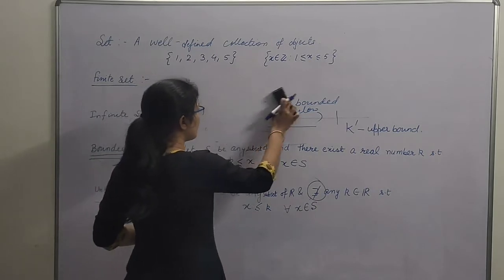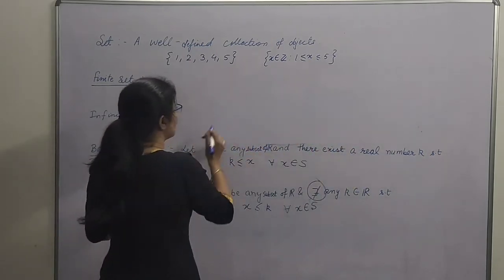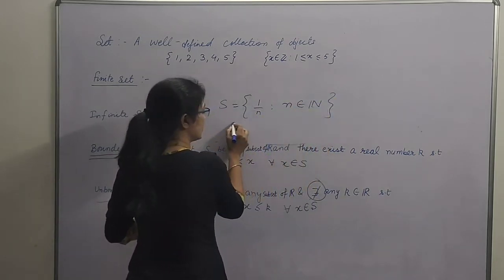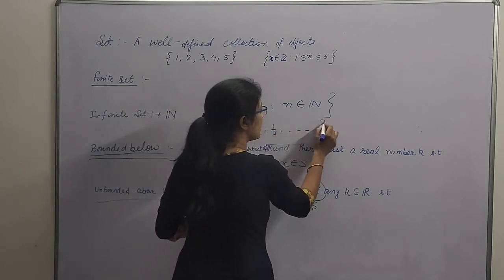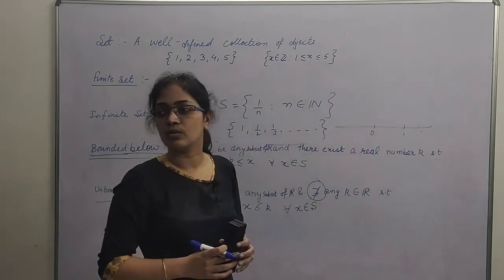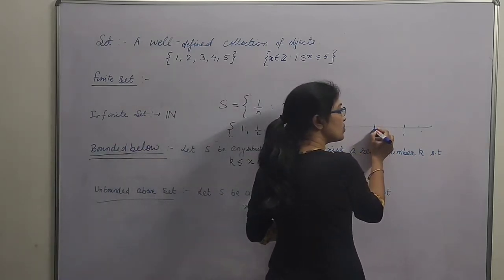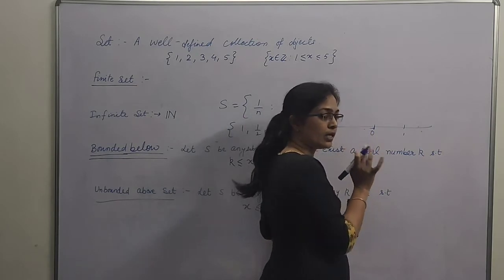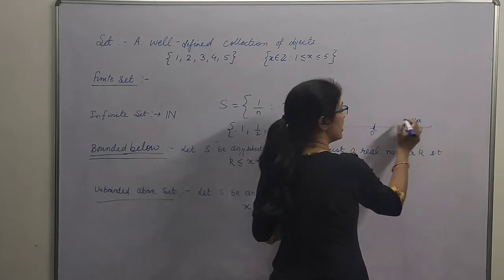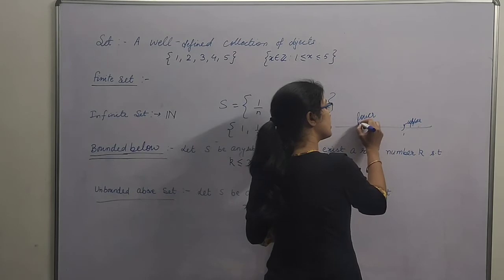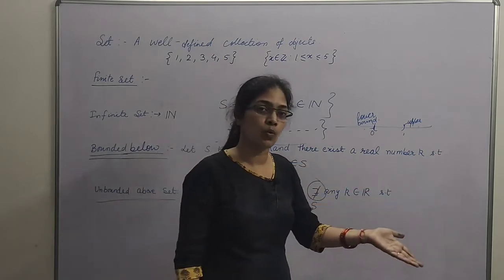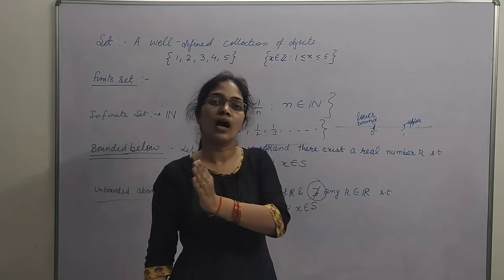Humne abhi ek example liya tha: S = {1/n}. Is set mein jo elements the, woh kya the? 1, 1/2, 1/3, and so on. Now these numbers are going near to 0 and all these numbers lie between 0 and 1. Koi bhi number 0 se chhota nahi hai, toh saare number 0 se bade huye. Aur koi bhi number 1 se bada nahi hai. So 1 is an upper bound for this set, and 0 is a lower bound for this set. Toh is set ka lower bound exist kar raha hai, iska matlab this set is bounded below. Upper bound exist kar raha hai, means this set is bounded above also.